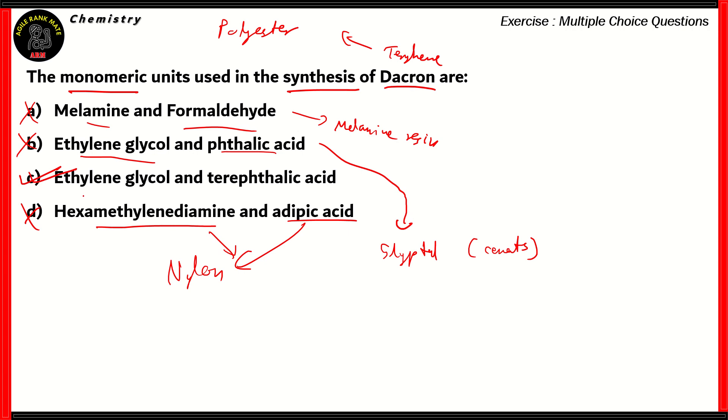The right option is option C. Ethylene glycol and terephthalic acid are used to form Dacron, which is given here. So basically, ethylene glycol is HOCH2CH2OH, and terephthalic acid is basically benzene connected to two COOH units, which is then repeated N times. So when you add terephthalic acid to ethylene glycol, you get this particular monomeric unit, and that's repeated to form Terylene. So basically, what we're doing is having a condensation polymerization reaction where a water molecule is removed to form Dacron.